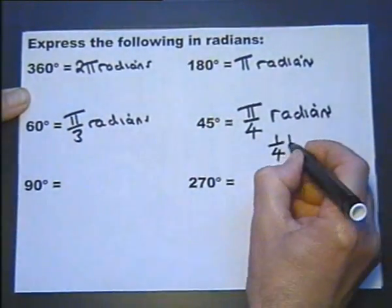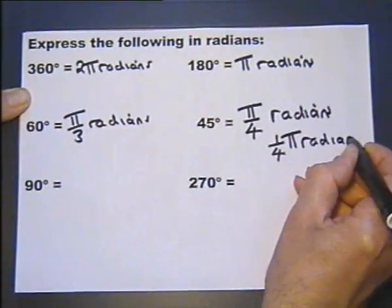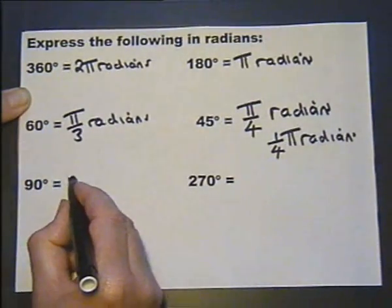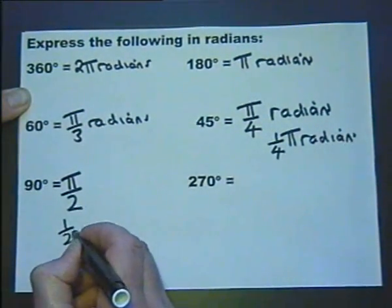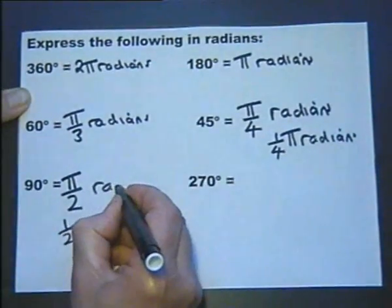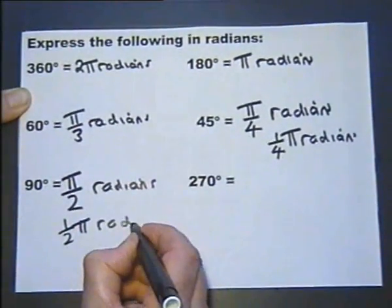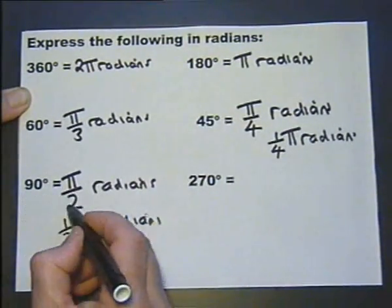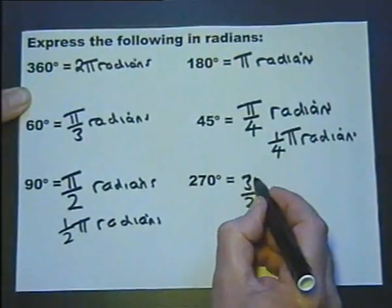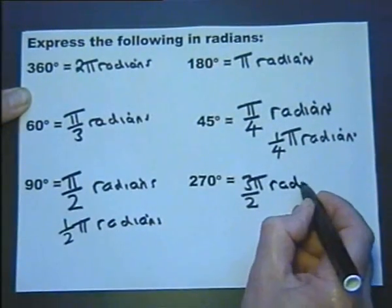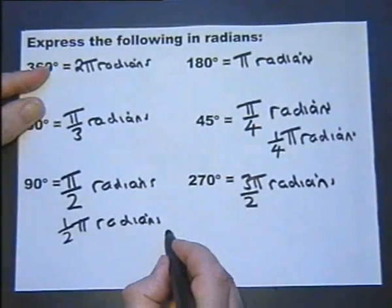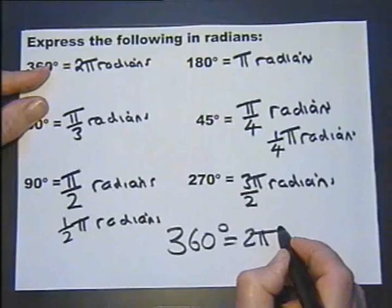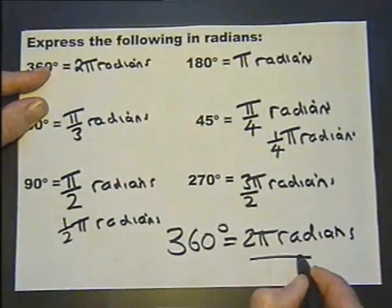90 degrees, as I've just said, is half of 180, so it's a half of π radians. 270 degrees will be 3 90s, so we can write that as that many radians. But the only thing I need to remember is this one. All of the rest we can work out from that if we need to.